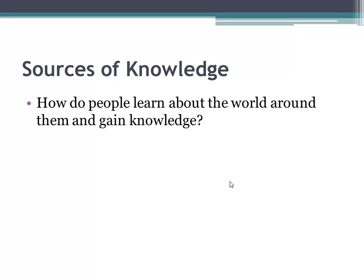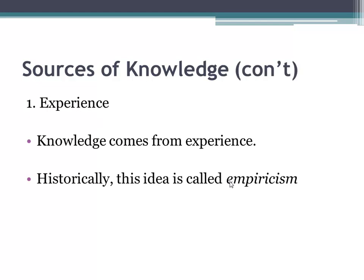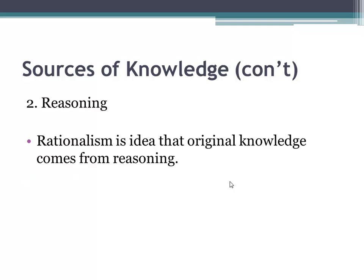In this next section, we discuss how people learn about the world around them and gain knowledge. The two major ways we learn are through experience and reasoning. The idea that knowledge comes from experience is called empiricism. The term empirical literally means based on observation, experiment, or experience.